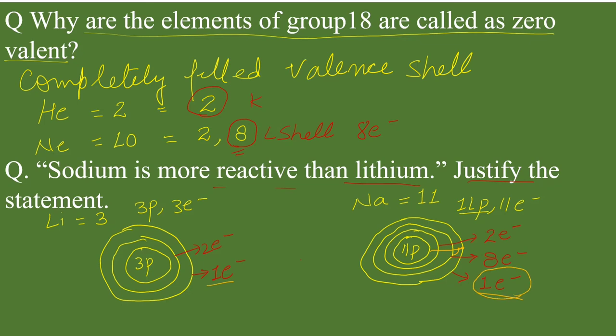Whereas in case of lithium, its atomic size is small, so the distance from outermost electron to nucleus is comparatively less. So it is not easy for lithium to lose this electron due to the greater force of attraction of nucleus on outermost electron.